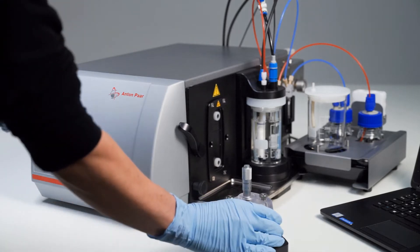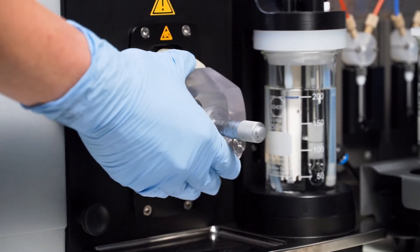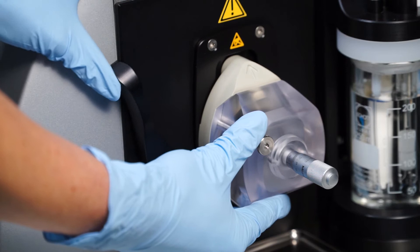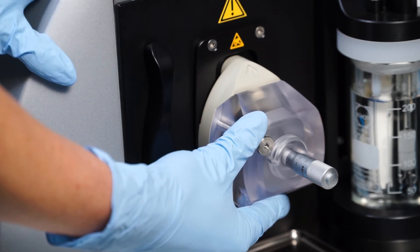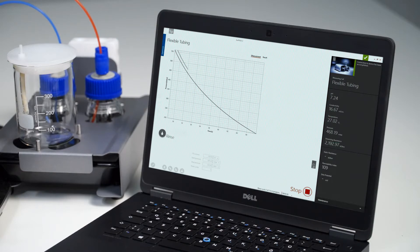Now mount the measuring cell on the instrument. Simply plug in the cell and lock it by turning the lever upright. The flexible tubing cell is then recognized by the Surpass 3 software.